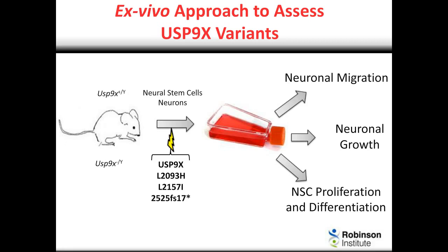This was a really useful finding, because it gave us the utility to now re-express either wild-type USP9X or the variant forms, to really assay whether the variants of USP9X altered their function.